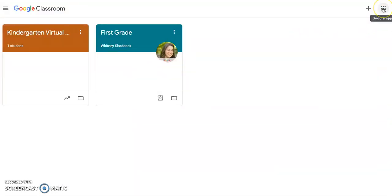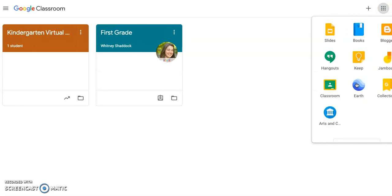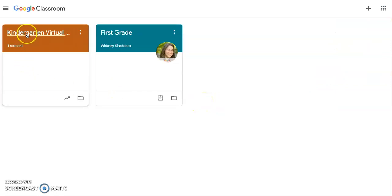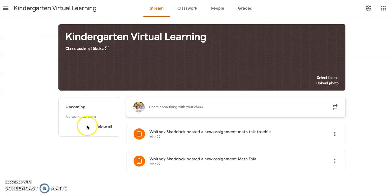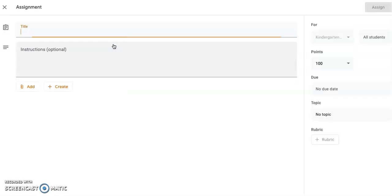If you don't know how to get to Google Classroom, you'll just need to have your Google account. And then you will need to go click on the keypad. And then scroll all the way down to Classroom. And it will open up Google Classroom. I'm going to choose my kindergarten virtual classroom. I'm going to choose Classwork up here at the top.